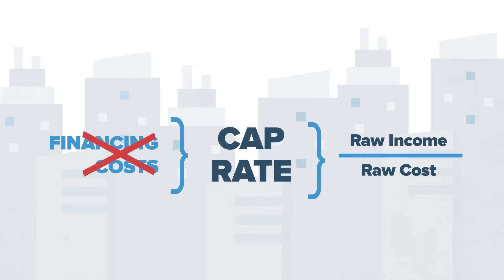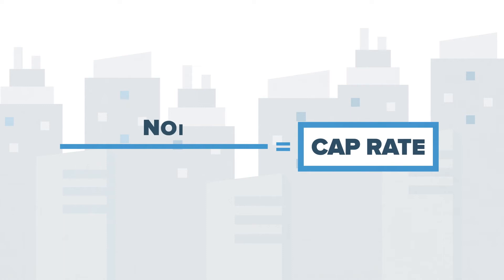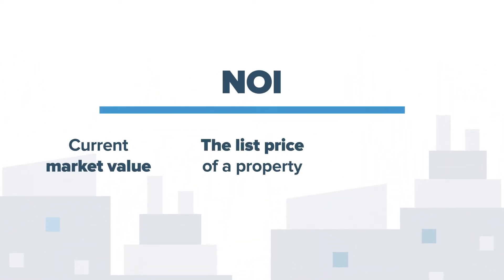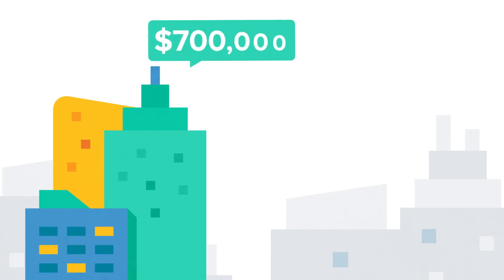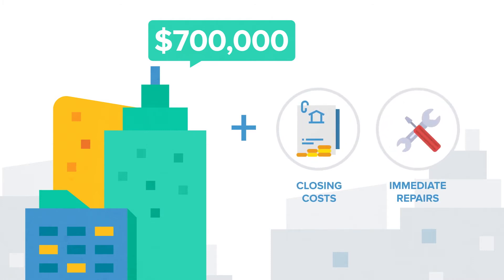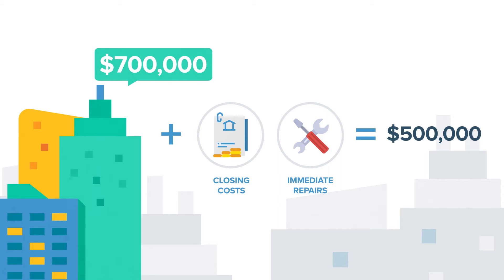Whether an investor buys a property for cash, puts 10% down, or 25% down, the cap rate will always stay the same regardless of the financing situation. Now, when we say that the cap rate is NOI divided by market value or cost, let's explain this a little further. A property's cap rate can be calculated based on either the current market value, the list price, or the total cost you acquire it for — and these three things aren't always the same number. A property may be worth $700,000 in market value, but if you can acquire it for $500,000, that becomes the more relevant number.